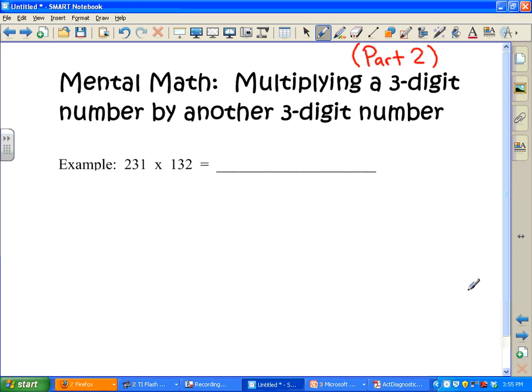Okay, here we have part two of the problem we just did: mental math multiplying a three-digit number by another three-digit number. Our example is 231 times 132.